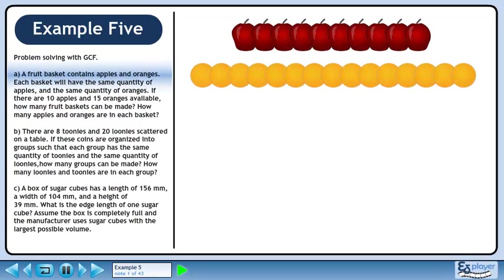In this example, we'll solve problems using the GCF. In Part A, a fruit basket contains apples and oranges. Each basket will have the same quantity of apples and the same quantity of oranges. If there are 10 apples and 15 oranges available, how many fruit baskets can be made? How many apples and oranges are in each basket?